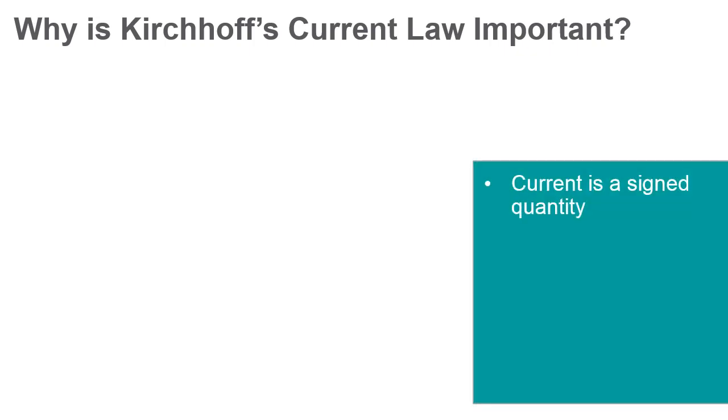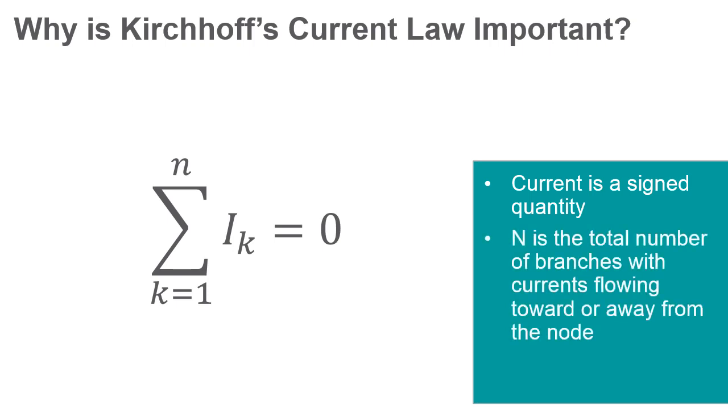Remember that current is assigned positive or negative quantity, reflecting direction toward or away from a node. This can be stated as the following equation, where n is the total number of branches with currents flowing toward or away from the node.